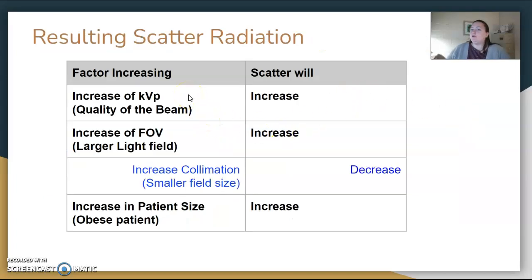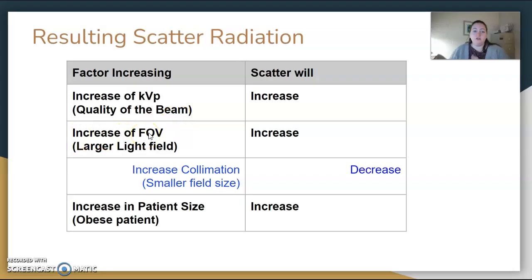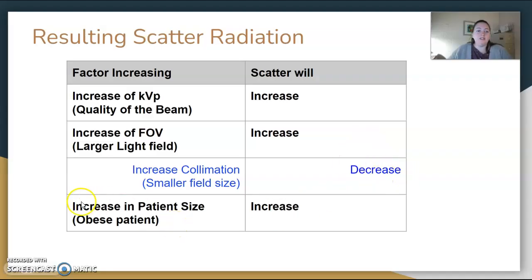Scatter radiation increases or decreases based on certain factors. Increasing KVP — which increases the quality, energy, and penetrability of the beam — will increase scatter. Increasing your field of view by making your light field larger will also increase scatter. We want a small light field: increase collimation and make a smaller field size, which will decrease scatter and improve image quality. Increasing patient size also increases scatter, which is why collimation remains important. Use the correct IR size — don't go bigger just because you have a bigger patient; their bones are not any bigger.